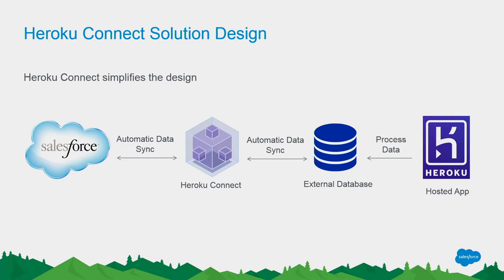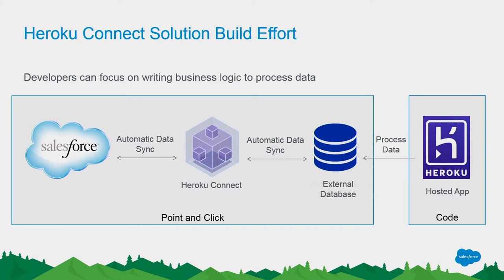What Heroku Connect does is simplify our design quite a bit. Where before we had an application server and quite a few components, Heroku Connect simplifies everything by sitting in between and automatically synchronizing the data, so we can then have an app that just processes the data. In my example I'm going to use Heroku to host that app as well, but since it's a Postgres database, you can use any application development platform to host your app and run it. Rather than concentrating on how to synchronize data and worrying about API calls, we can configure Heroku Connect to do the bulk of the work and focus on writing the actual logic that processes the data.